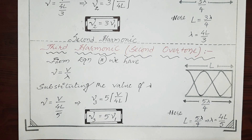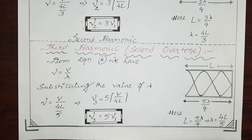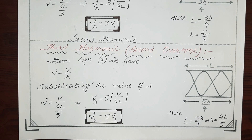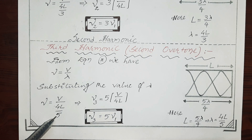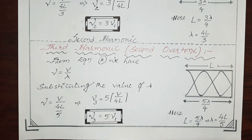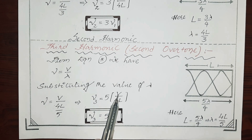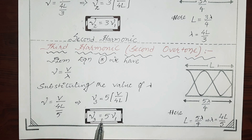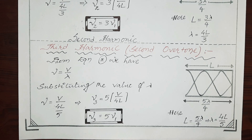From the universal wave equation, nu equals V by lambda. Substituting lambda equals 4L by 5, nu equals V divided by 4L by 5. So the 5 comes to the numerator, giving nu_3, the third harmonic, equals 5 times of V by 4L. Since V by 4L is the fundamental frequency for a closed pipe, nu_1, the third harmonic equals 5 times the fundamental frequency.